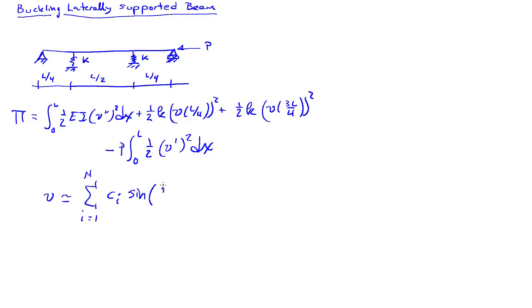Sine I pi x over L. The sines are designed to satisfy the boundary conditions at the two ends of the beam. We can plug in V into pi here, and we're going to end up with an expression for pi that depends on C1, C2, all the way out to Cn. So my potential energy becomes a function of N parameters.